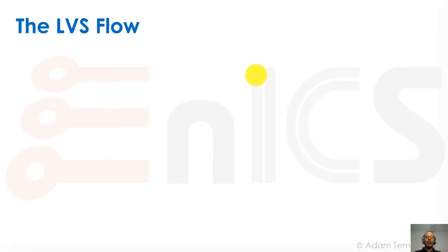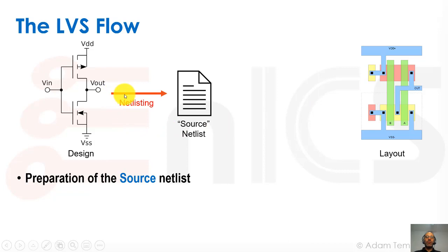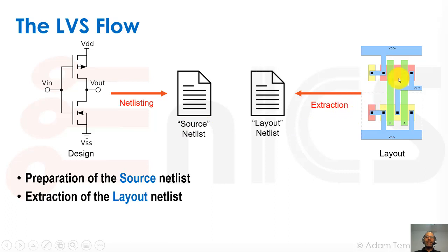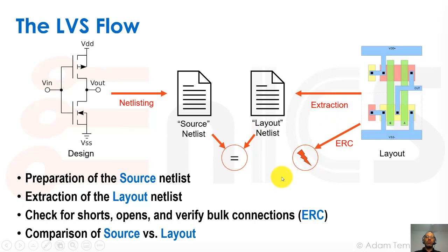So how does the LVS flow work? We have our design — the thing we drew in our schematic, or in the case of this lesson, what the place and route tool made — and we have our layout. The first step is netlisting: we turn the schematic into a SPICE netlist, which we call the source netlist. Then we take our layout and extract the connectivity and devices from it — this extraction gives us the layout netlist. Before comparing, we do an electronic rules check, a sanity check for big short circuits and similar issues. Then we compare the source and layout netlists to see if they're the same.